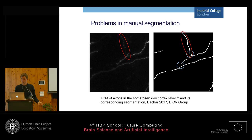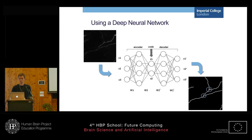The current techniques of segmentation are also designed for one kind of images, and the problem is that they are weakly transferable. That's why we use a deep neural network to teach the network to reconstruct the segmentation image.